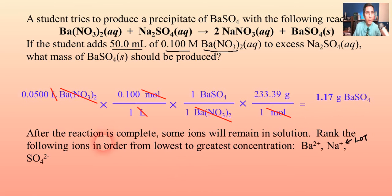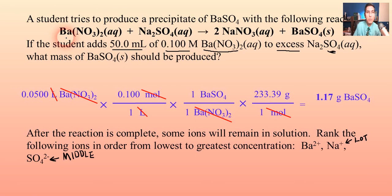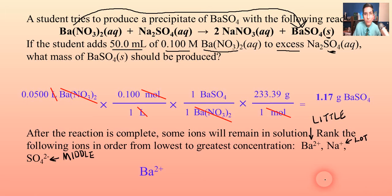What about barium and sulfate? Remember, sodium sulfate is the excess reactant — the problem states that. So we'll have some excess sulfate left over. Sulfate will be in the middle — not as much as sodium, but still a good amount. Barium is going to be the smallest because it's the limiting reactant — all the barium goes straight into the precipitate as a solid. So: barium is least, then sulfate, then sodium is the highest concentration.